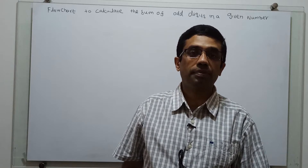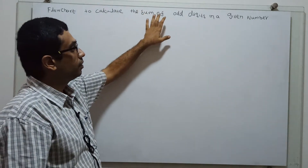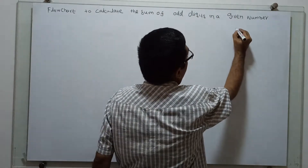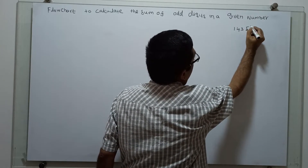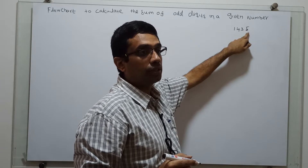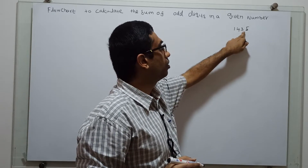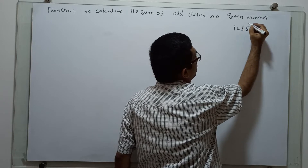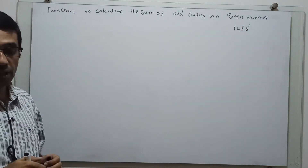Hi friends, today we are going to draw a flowchart to calculate the sum of odd digits in a given number. For example, I have the number 1435. The odd digits are 1, 3, and 5. So the sum of the odd digits is 1 plus 3 is 4, plus 5 equals 9. We have to add 1 with 3 and 5, so 5 plus 3 is 8, 8 plus 1 is 9. For this we are going to draw a flowchart.